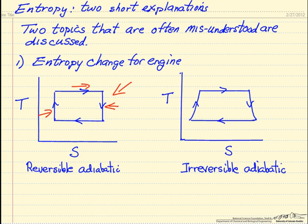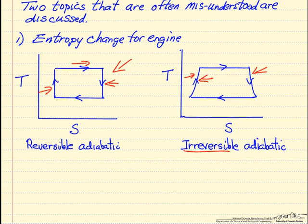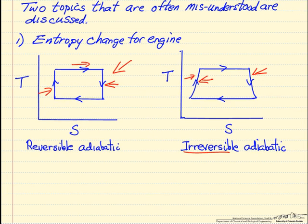We're going to compare that to an approximation to our Carnot cycle, but where this step and this step are now irreversible. We're going around the cycle, but the entropy increases during this adiabatic step, and then the entropy increases during this adiabatic step. We want to look at what's the entropy change for the engine. In the first case, the reversible adiabatic steps, the entropy change for this engine is 0.